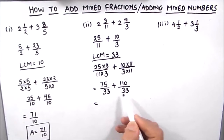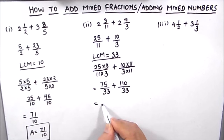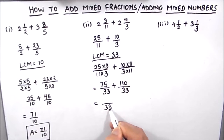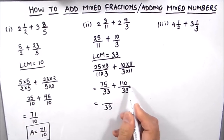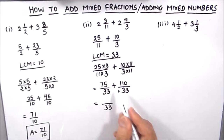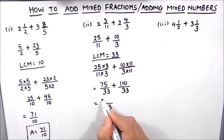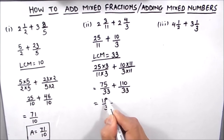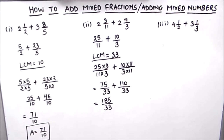Now we can add the two fractions directly because their denominators are the same. So 110 plus 75 will be 185 divided by 33.